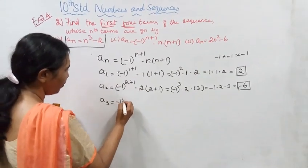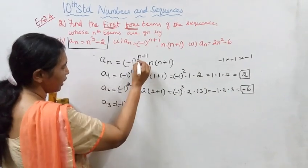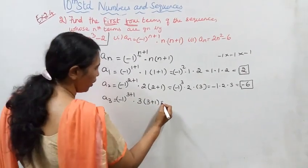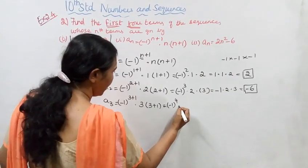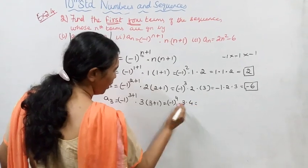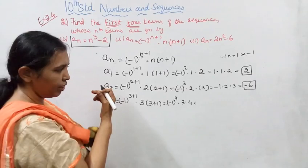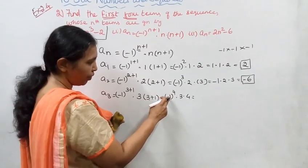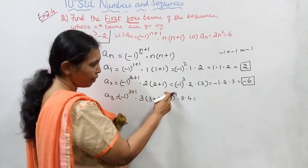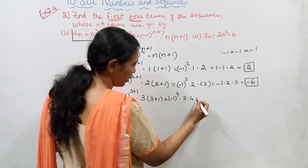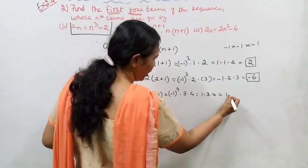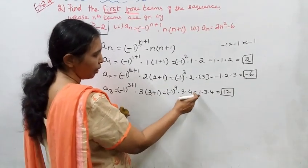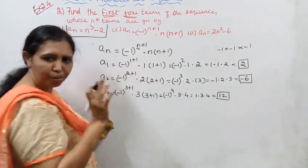a_3: minus 1 to the power 4, into 3, into 4. Power is even, so it's plus 1. 1 into 3 into 4 equals 12.